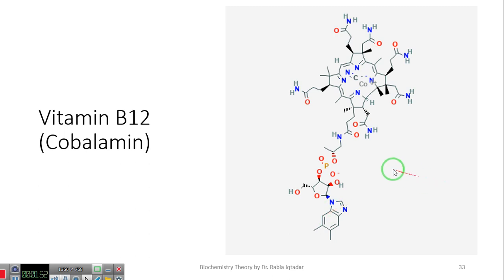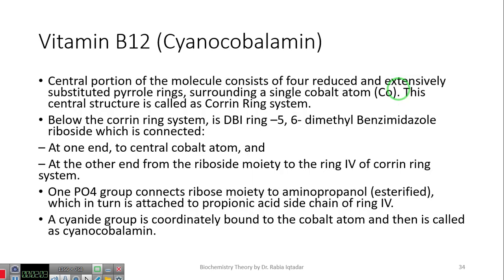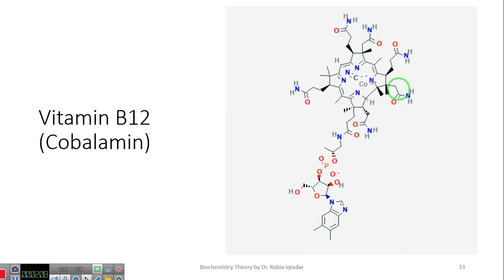Here you can see that this DBI ring structure is connected here with the ring number four. A cyanide group is coordinately bound to the cobalt atom, and is called as cyanocobalamin. Here you can see, the cobalt ring has a positive charge. This positive charge enables it to form a coordinate covalent bond, which it forms with the cyanide.